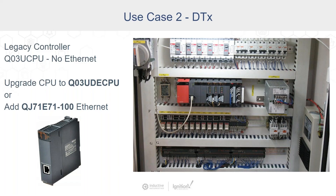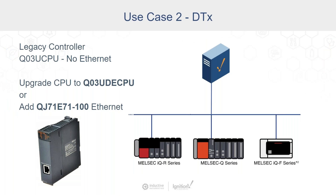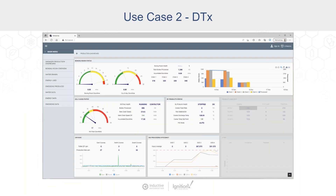In this example, we've got a Q series system out in a panel with full racks. If there's a spare rack available, we can simply plug in a Mitsubishi Ethernet module. Mitsubishi still makes these modules, so it's easy to buy one, plug it in, configure it, and connect very quickly. It's a really elegant, simple architecture, and the Mitsubishi driver from Inductive connects to all these different devices — keeping everything in one package.